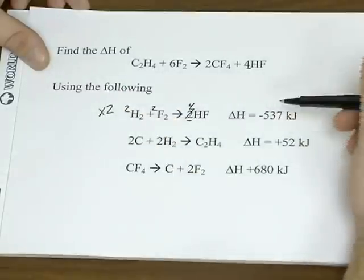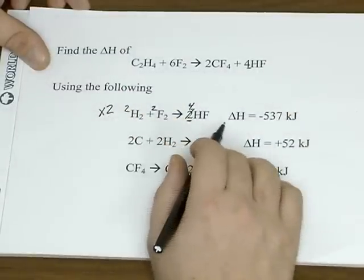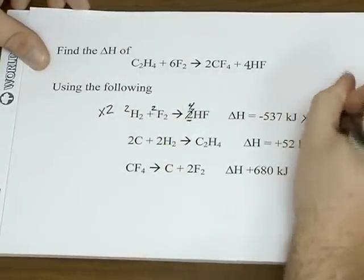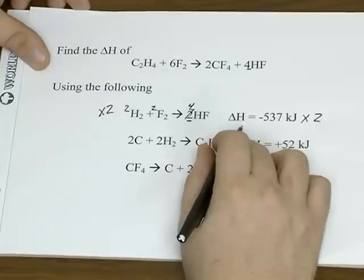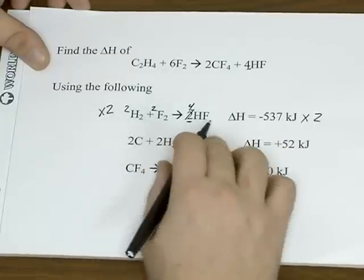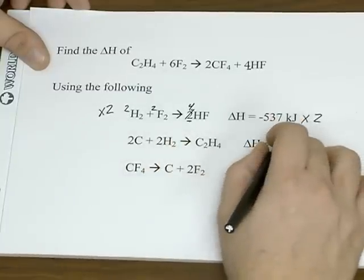But one thing about working with Hess's law, whatever you do to the equation, you're going to have to do the same thing to your enthalpy change. And we're doubling the coefficients, so we've got to double the delta H.